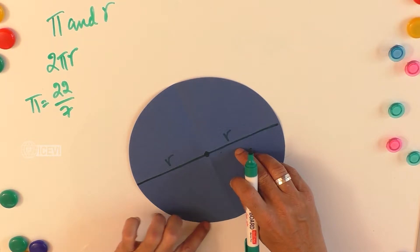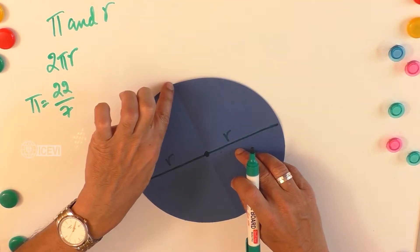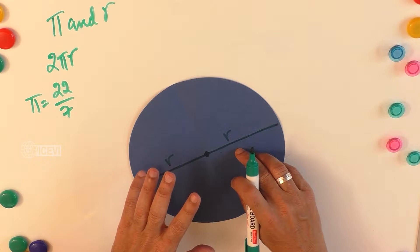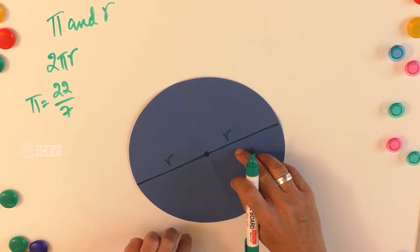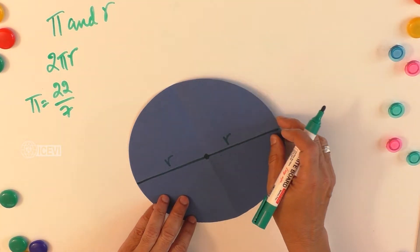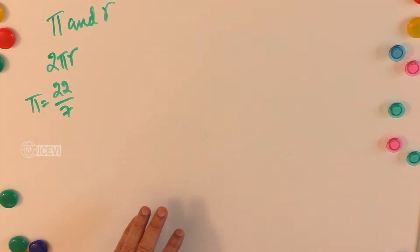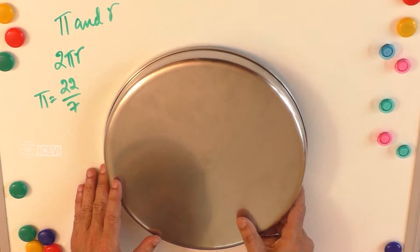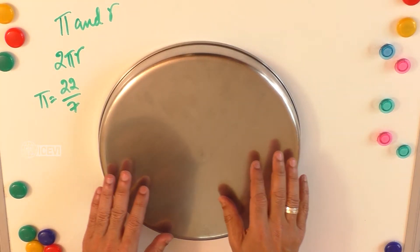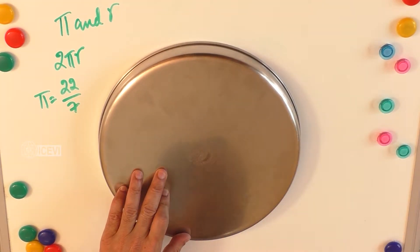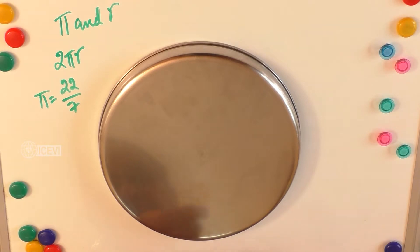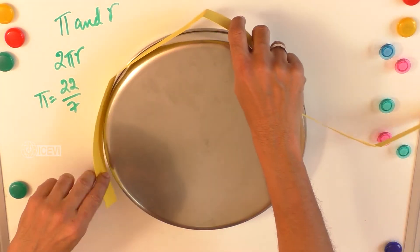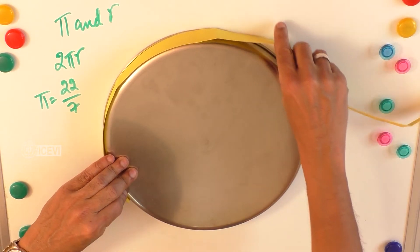The diameter and the circumference of the circle are linked in a certain proportion. Let us find that out using real objects, giving practical experience to the child. Let us take a plate and find out its circumference using a paper strip.